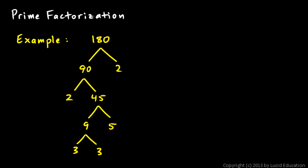Now, when you're done, every number at the bottom, all the numbers at the ends of the branches—the 2, the 5, the 3, the 3, and this 2—those are all prime numbers. If they weren't prime, you could factor them, and you would do that. The fact that you can't factor any further means those are all prime numbers.